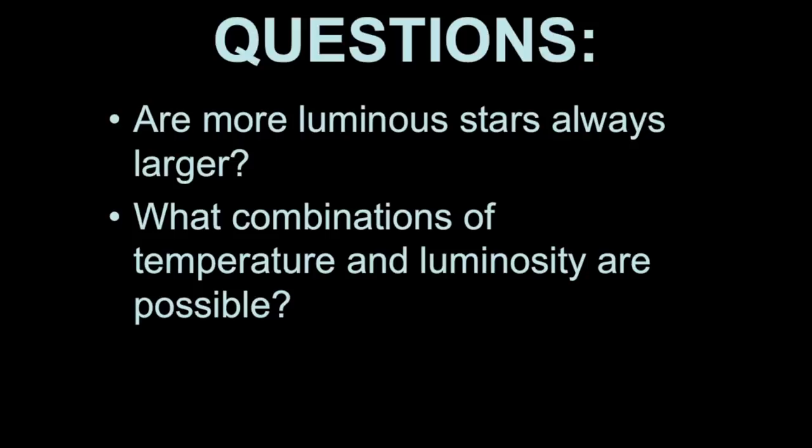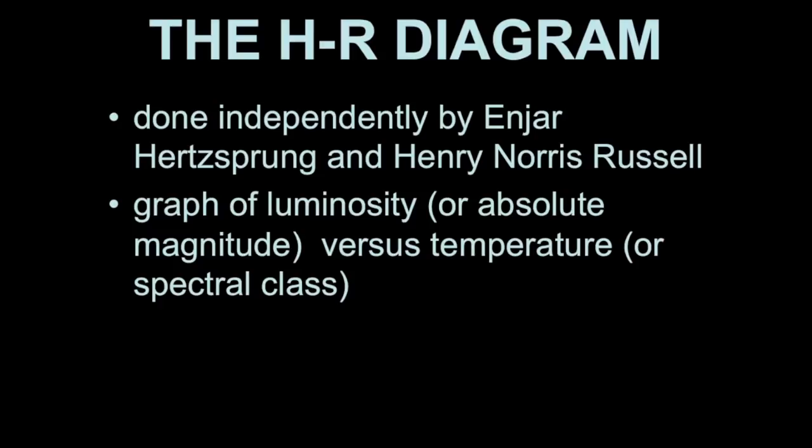To answer these questions, we look at something called the HR diagram, which was developed independently by two astronomers, Hertzsprung and Russell. And it's a graph of the luminosity versus temperature, or absolute magnitude versus spectral class. You've actually seen this before when we discussed luminosity.